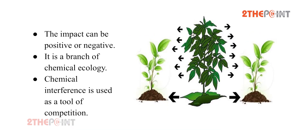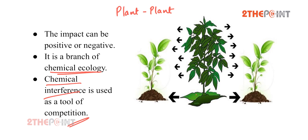The impact of allelopathy may be either positive or negative. Allelopathy is a branch of chemical ecology. Chemical interference is used as a tool of competition, and it can be observed and studied in plant-plant interaction.